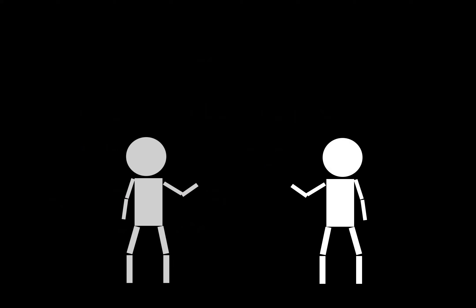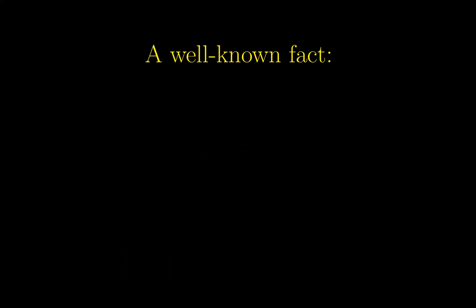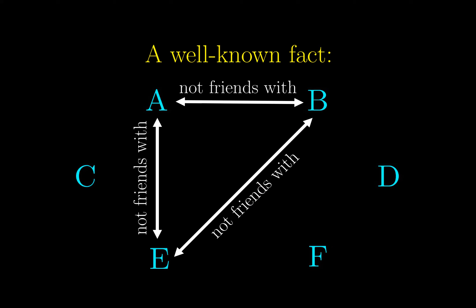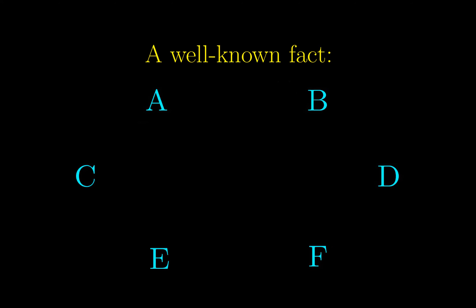If we assume friendship is mutual, which means if A is friends with B, then B is also friends with A, then it is a well-known fact that among any 6 people on the planet, you can always find a group of 3 people who are friends with each other, or not friends with each other.